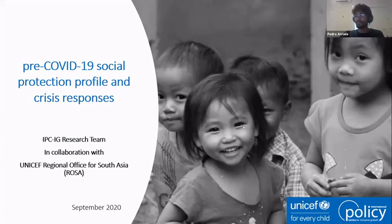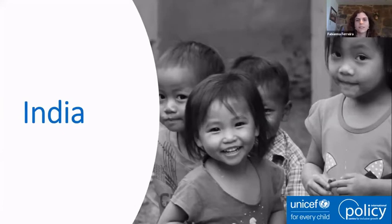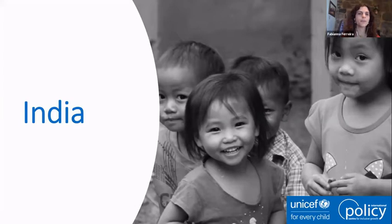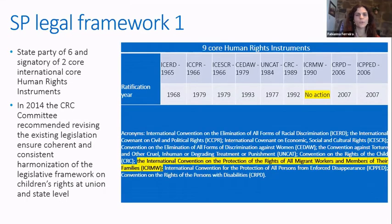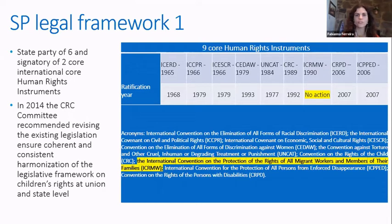Thank you for the introduction and thank you Yannick for the presentation. I'm going to talk about the same studies as Yannick, but focusing on India instead of Pakistan. As the table is showing, India is either a state party or signatory of eight out of the nine most relevant human rights instruments promoting social protection and children's rights — the exception being the international convention on the protection of the rights of all migrant workers and members of their families.